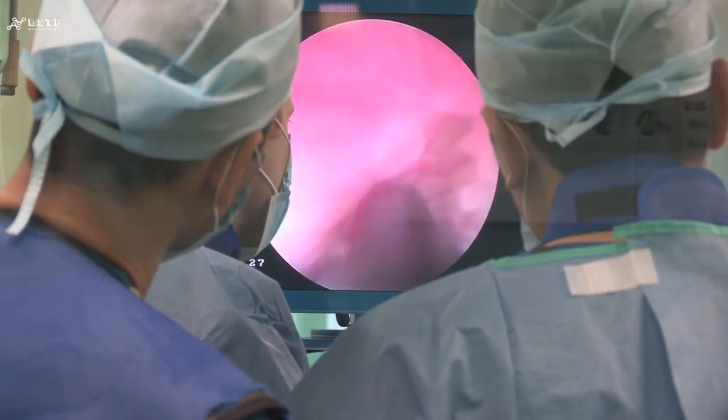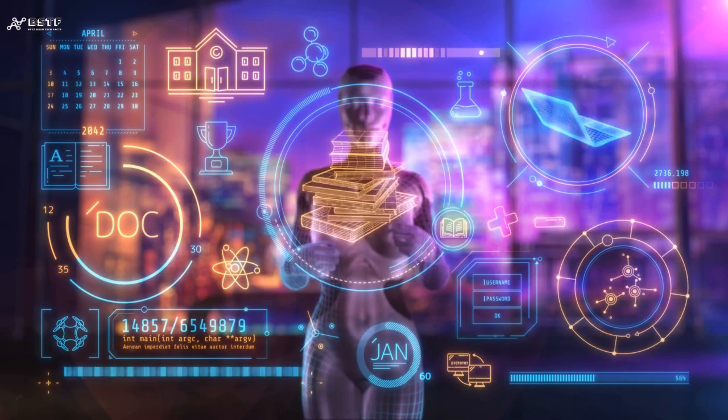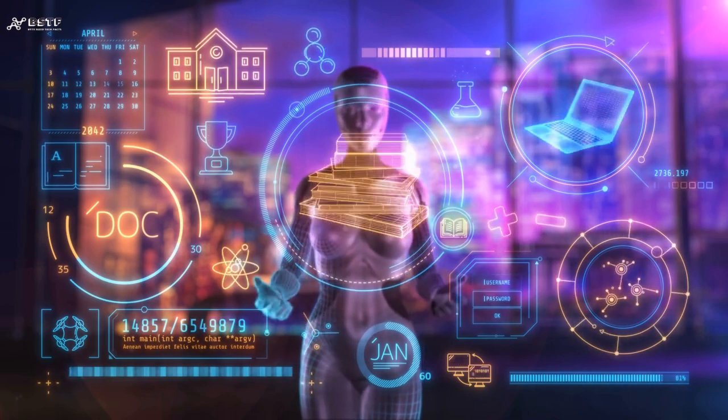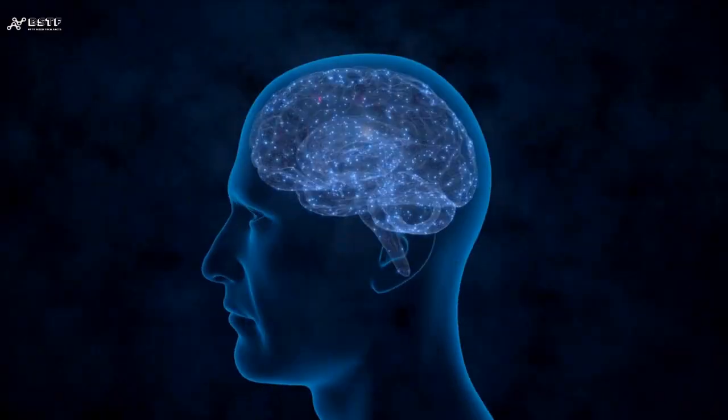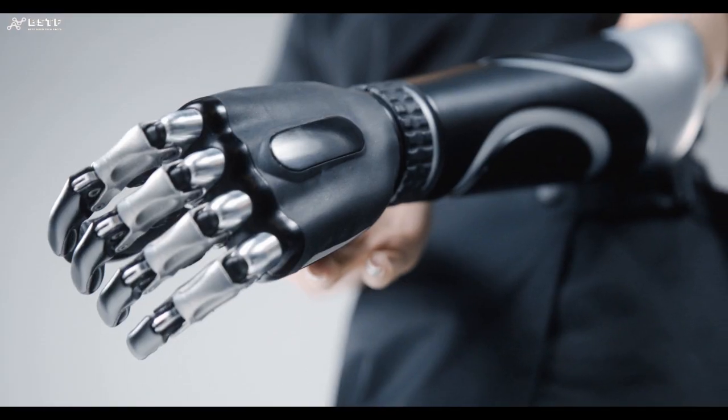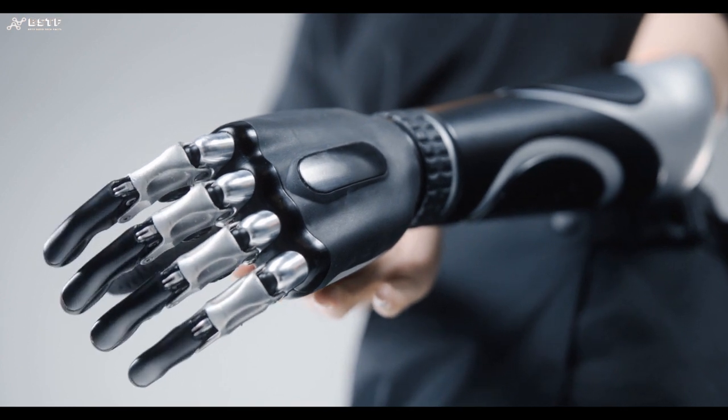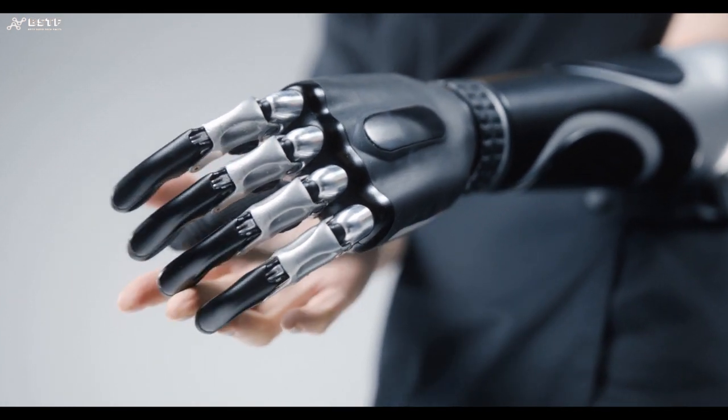All right, enough with the science talk. Let's get to the cool stuff. What can BCIs actually do? The possibilities are mind-boggling. Imagine paralyzed individuals regaining mobility by controlling robotic limbs with their thoughts.